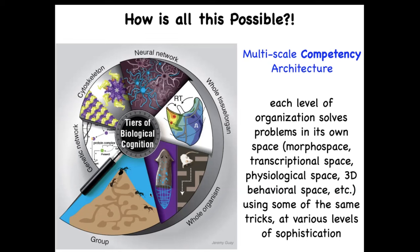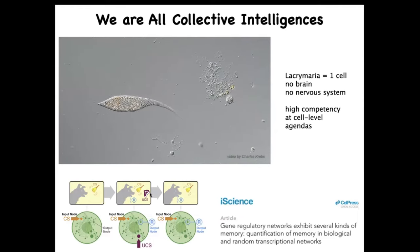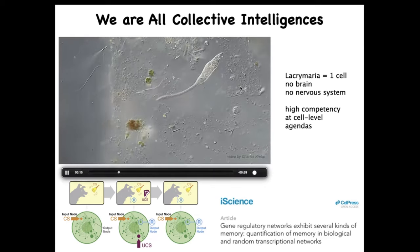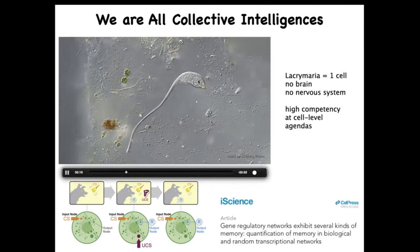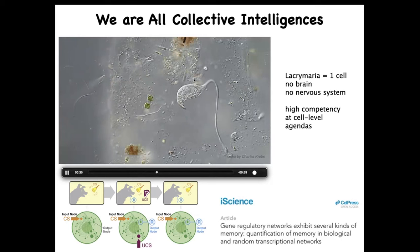We have the opportunity to reset their set points and have various other interesting interactions with them. Fundamentally, we are all collective intelligences — there is no indivisible diamond of intelligence. We are all made of cells. Here is a cell that happens to be a free-living organism known as a Lacrimaria. One cell, no brain, no nervous system — this thing is incredibly competent, with tiny local metabolic and physiological goals. Anyone into soft robotics should be amazed. We don't have anything remotely like this level of control.